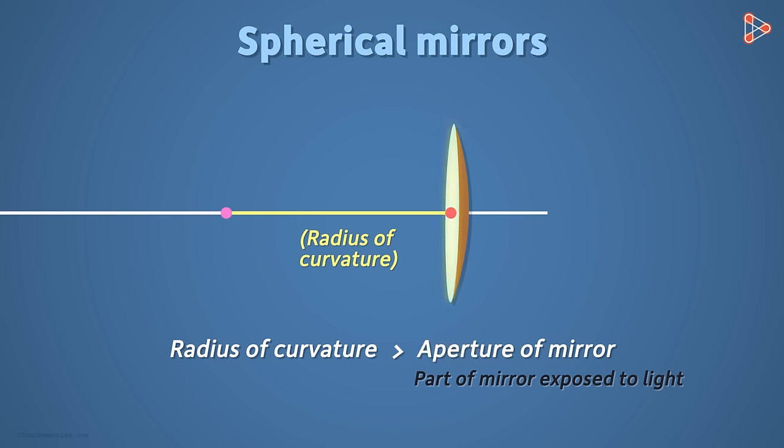In our mirror, this is its aperture since the light can be incident anywhere in this region. If we hide some part of the mirror with an opaque substance, then its aperture is reduced.